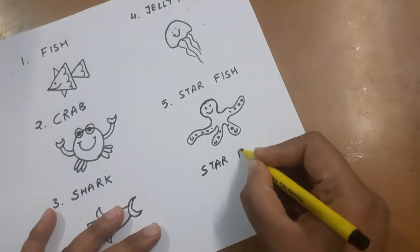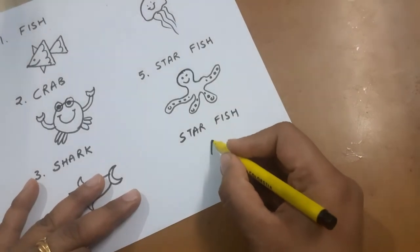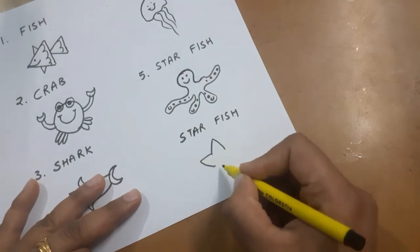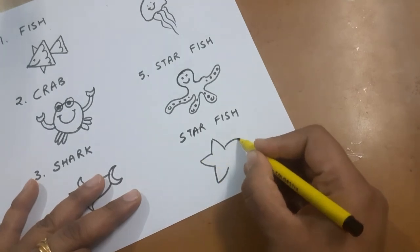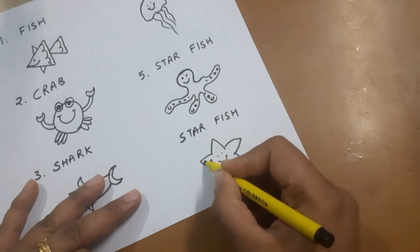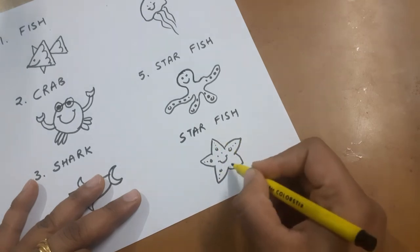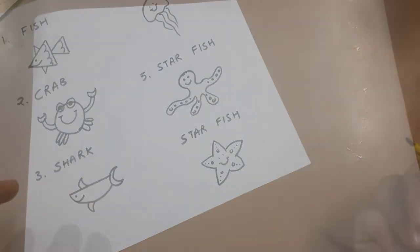Next is starfish. For starfish you will use a V-like shape and we will make five of these in all the directions. And the starfish is ready.